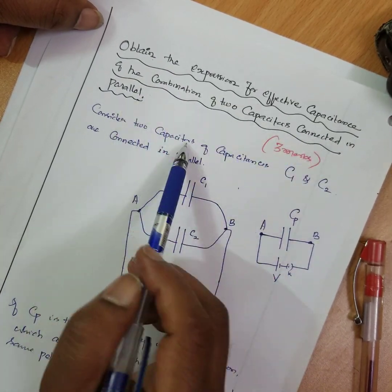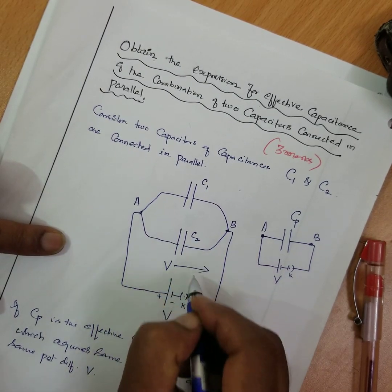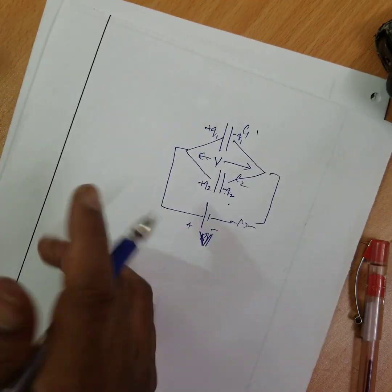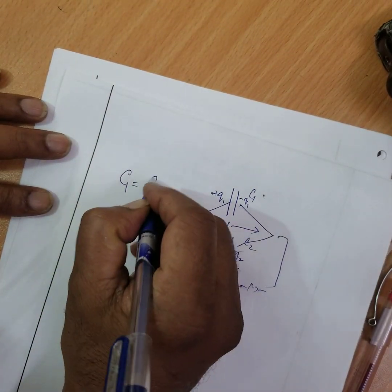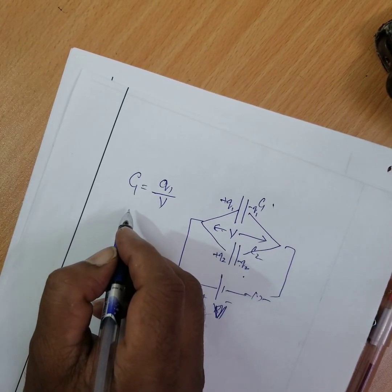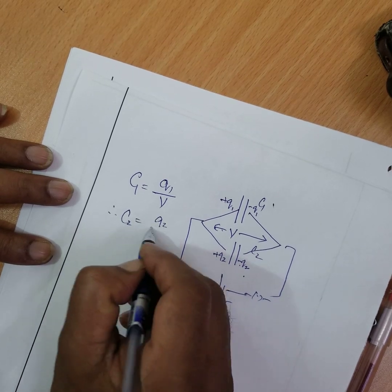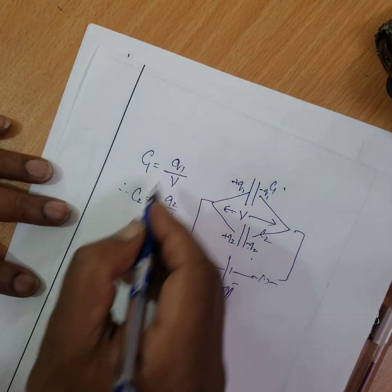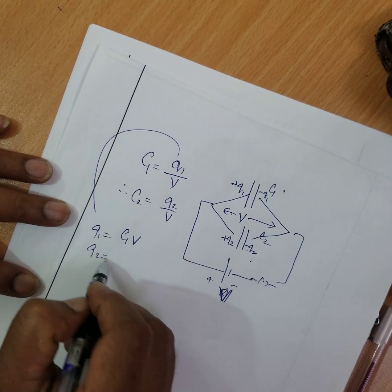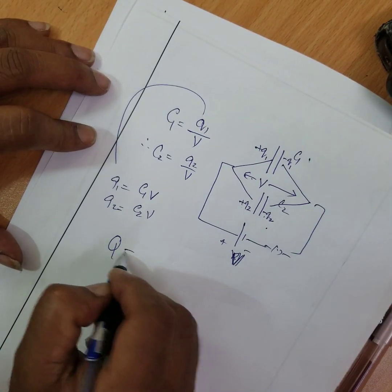V is the common potential for the parallel combination. C1 is equal to Q1 by V, and similarly C2 is equal to Q2 by V. Therefore from these relations, Q1 is equal to C1 times V, and Q2 is equal to C2 times V.